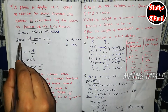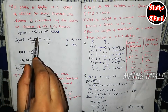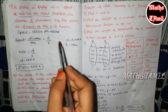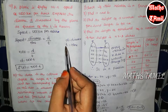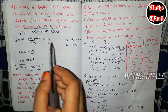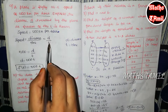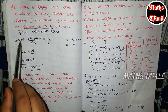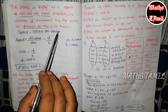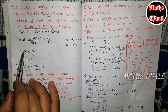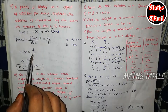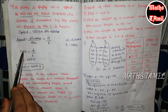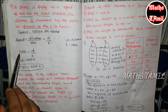Speed is a formula: distance divided by time. So distance is d and time is t. Speed equals d divided by t. Speed is 500 km per hour, so 500 equals d divided by t. Therefore, d is equal to 500t.